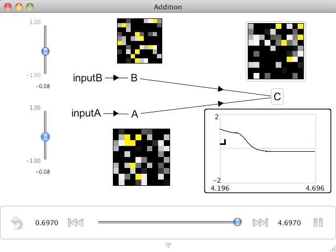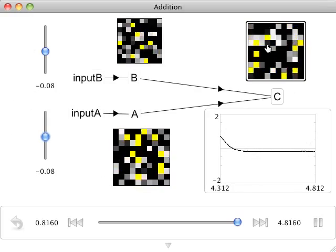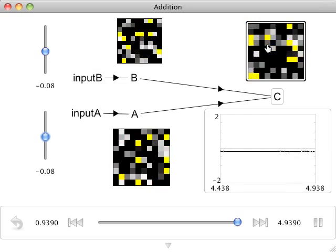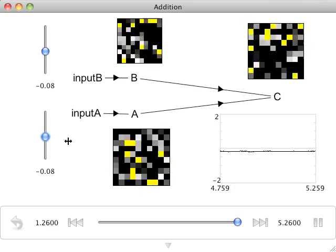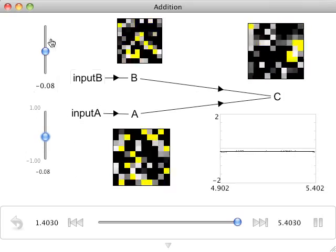However, if we were being more careful, we would set the radius of population C to be equal to 2, since the maximum range of values that it might want to represent would go from plus 2 to minus 2, given the range of inputs we expect.